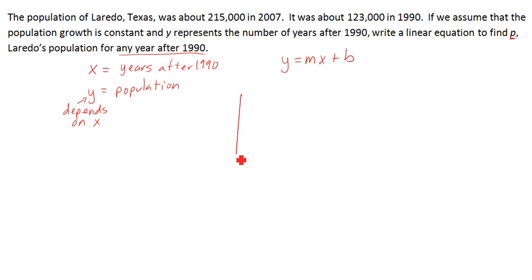So let's go through with it now. The next thing usually is to identify our data. In this case, my students usually like using x and y and just putting it into a table. So our first point is going to be in 1990, which is zero years after 1990, so that's going to be 123,000. And then the next one is going to be 2007. If you subtract, you'll find that 2007 is 17 years after 1990, the population then being 215,000.